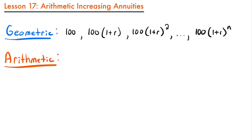If you're not familiar with geometric annuities, feel free to check out our previous lesson. Essentially, a geometric progression involved multiplying our payment amount by the same value of 1 plus R to a certain power. But an arithmetic progression is formed when our payments increase or decrease by the same amount via addition or subtraction of that same value. In this video we'll focus on the addition case — increasing arithmetic annuities. We'll look at decreasing arithmetic annuities in the next lesson.